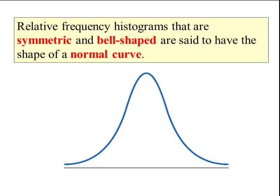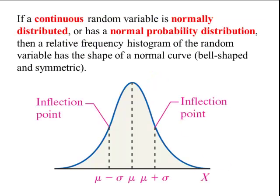Relative frequency histograms that are symmetric and bell-shaped are said to have the shape of a normal curve. If a continuous random variable is normally distributed, or has a normal probability distribution, then a relative frequency histogram of the random variable has the shape of a normal curve.